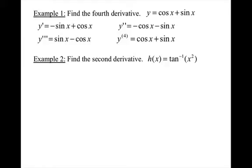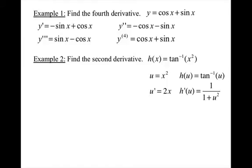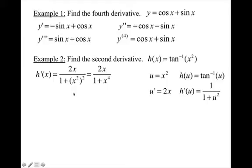Second example: find the second derivative of h of x equals tangent inverse of x squared. For the first derivative, I'm going to use the chain rule. My inner function is x squared, my outer function is tangent inverse. Derivative of x squared is 2x, and the derivative of inverse tangent is 1 over 1 plus u squared. Multiplying these together and replacing u with x squared, I can simplify to get 2x over 1 plus x to the fourth. Now when I find the second derivative, I'm going to have to use the quotient rule.